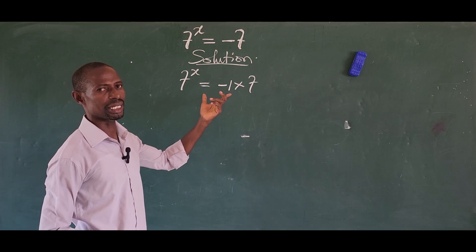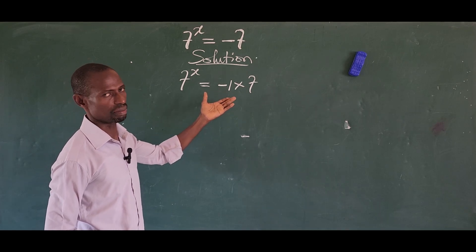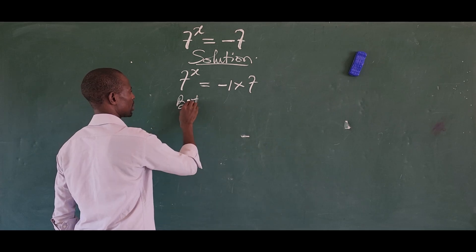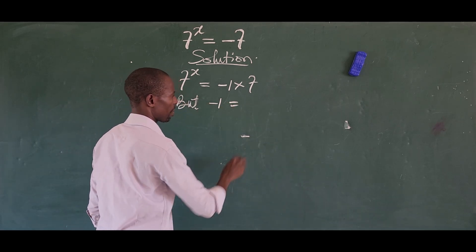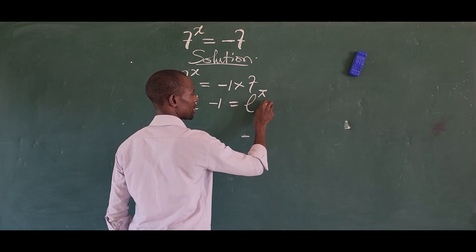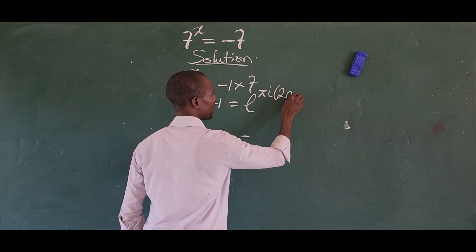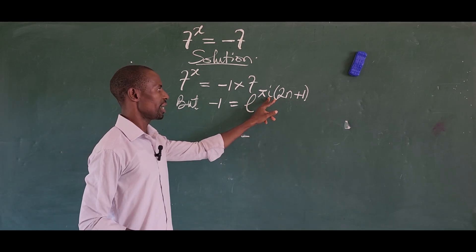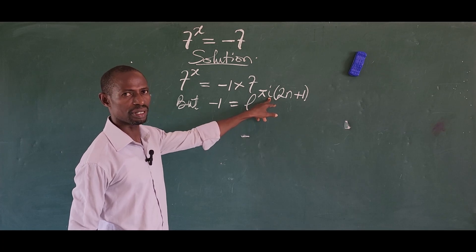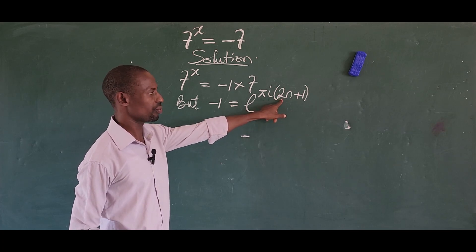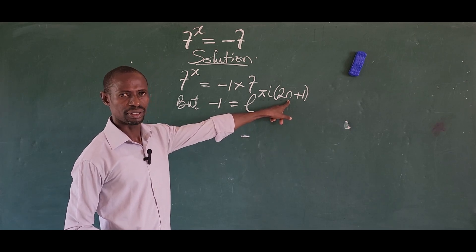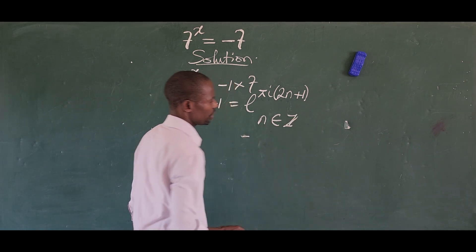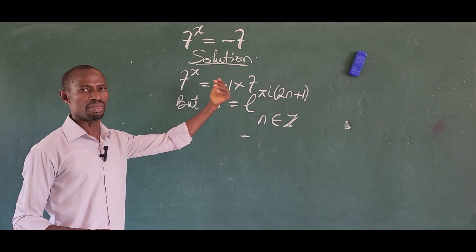Because we are looking at the imaginary world of complex numbers, we recall that minus 1 is equal to e raised to the power of πi(2n+1). Here e is a constant, π is also a constant, i is the imaginary unit (iota), and 2 is a constant. The n here belongs to the set of integers, so we're going to have infinite roots from this.